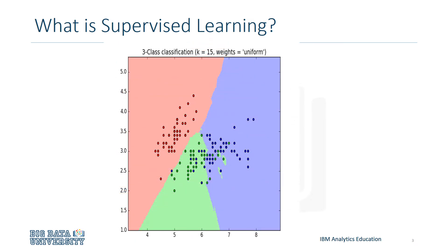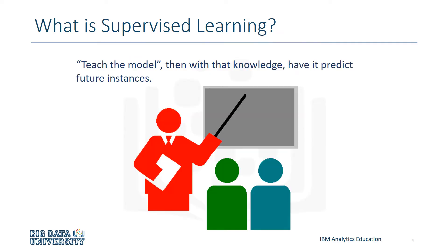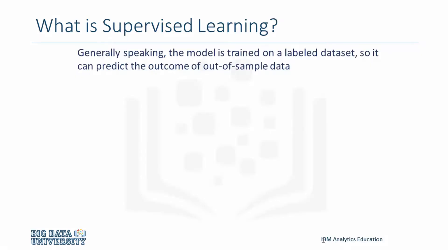So how do we supervise a machine learning model? We do this by teaching the model. That is, we load the model with knowledge so that we can have it predict future instances. We teach the model by training it with some data from a labeled data set.